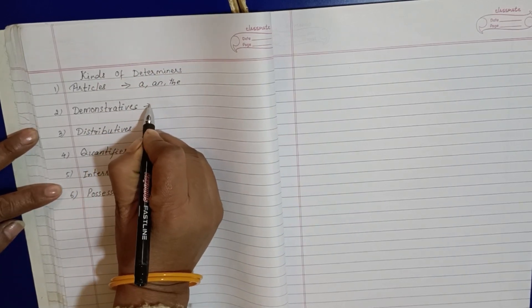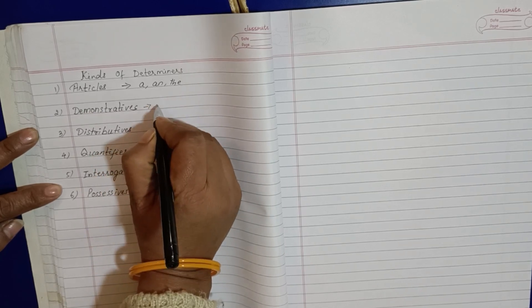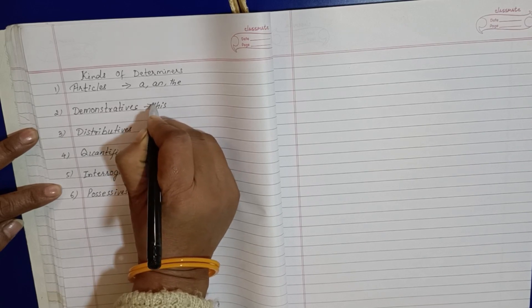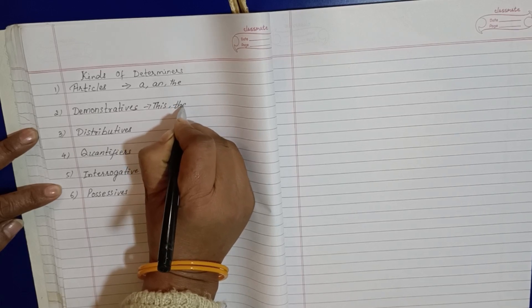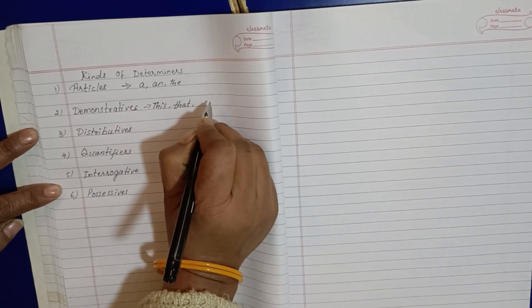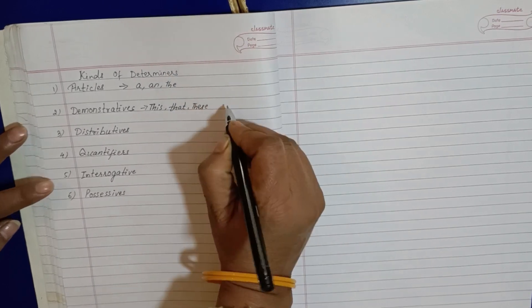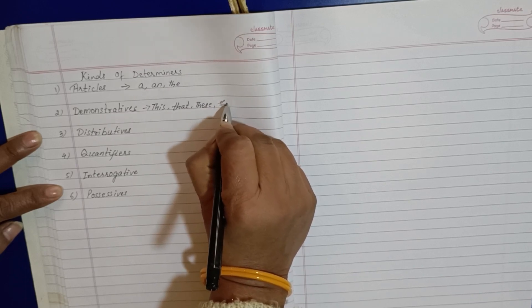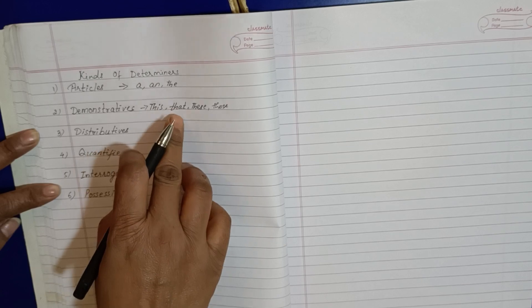Now demonstratives, what comes in this? This, that, these, and after the last one, those. So demonstratives - these, that, these and those.